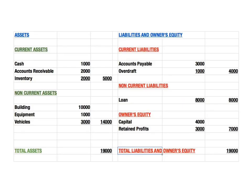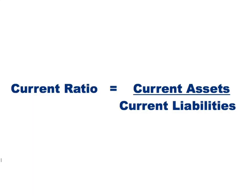In our example here, the current assets of the business are equal to $5,000 and the current liabilities are equal to $4,000. If we put this into our equation, we get that the current ratio equals current assets, which are $5,000, over current liabilities, which are $4,000.